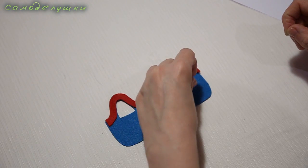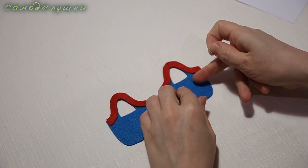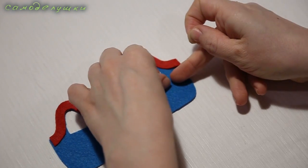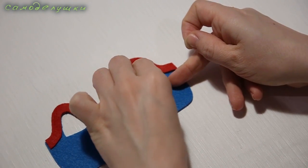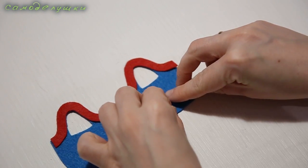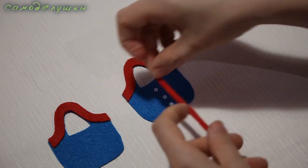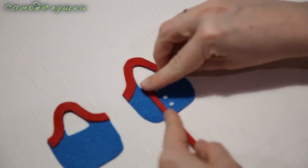Now I'll add decorative elements. I'll use little buttons. If you don't have little buttons, you can use beads or any other elements you have at home. This is how the buttons will be positioned. And I'll also sew thin strips of felt like this.